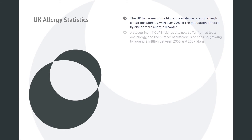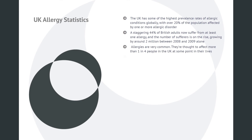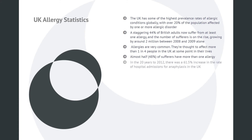The UK has some of the highest prevalence rates of allergic conditions globally, with over 20% of the population affected by one or more allergic disorder. A staggering 44% of British adults now suffer from at least one allergy, and the number of sufferers is on the rise, growing by around 2 million between 2008 and 2009 alone.